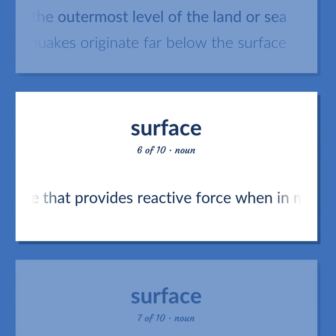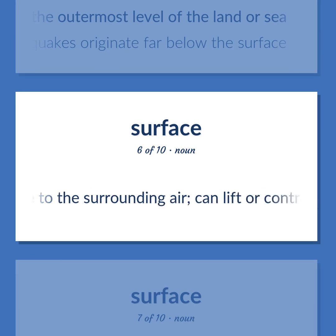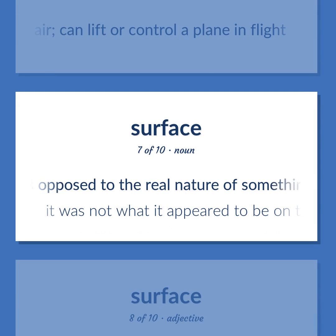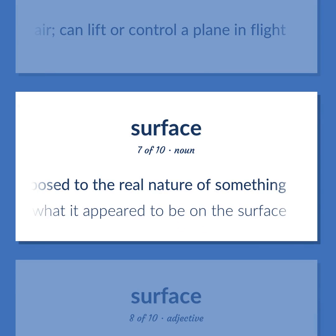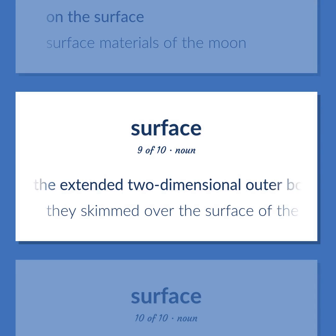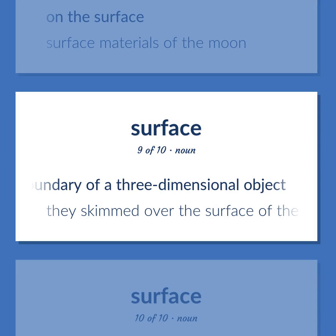Surface: A device that provides reactive force when in motion relative to the surrounding air, and can lift or control a plane in flight. A superficial aspect as opposed to the real nature of something — it was not what it appeared to be on the surface. On the surface. Surface materials of the moon. The extended two-dimensional outer boundary of a three-dimensional object — they skimmed over the surface of the water.